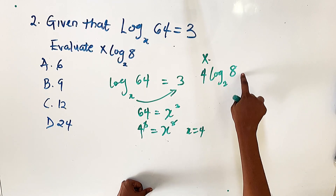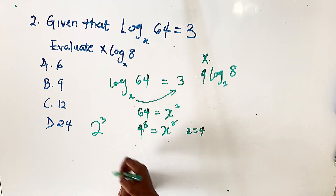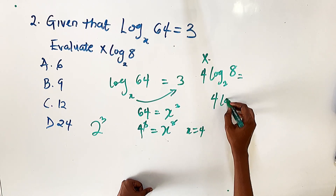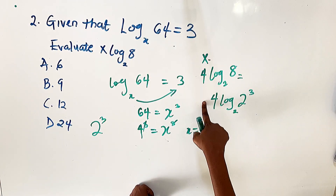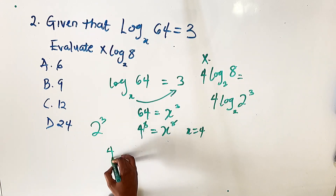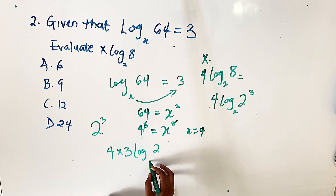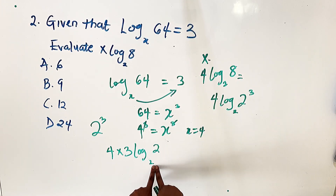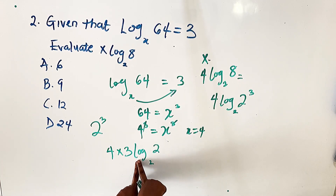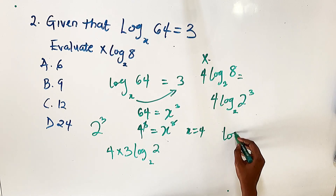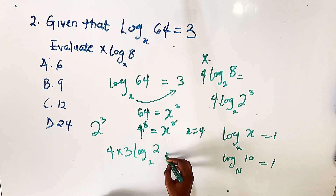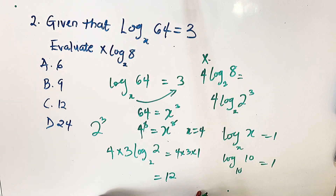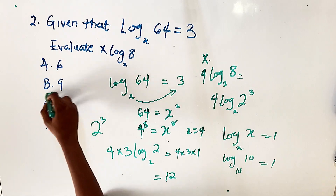Let's simplify by breaking down 8: 8 is the same as 2³. So this becomes 4 · log 2³ base 2. The power 3 comes out front, giving 4 × 3 · log 2 base 2. Since the number and the base are the same, log 2 base 2 = 1. So we have 4 × 3 × 1 = 12. Our answer is C.